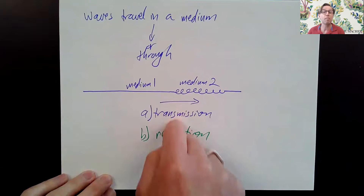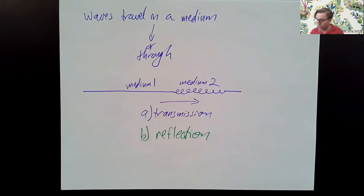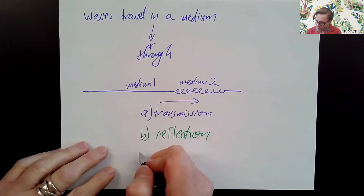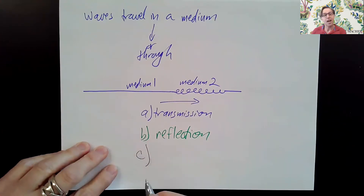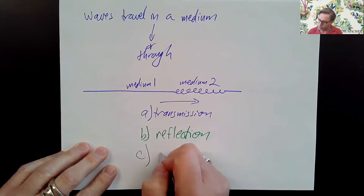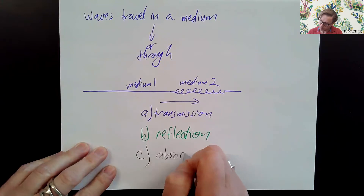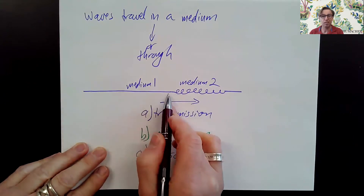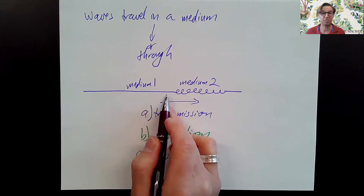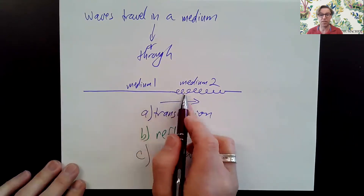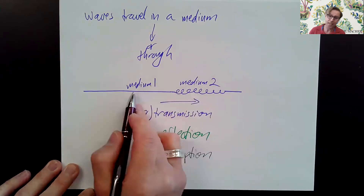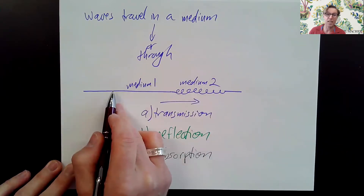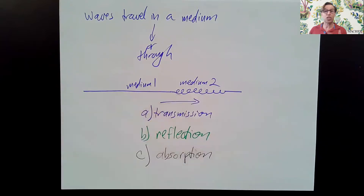Sometimes both transmission and reflection happen together. There is a third option — it's called absorption. Sometimes the energy that's traveling stops traveling. If it continues in the second medium, that's transmission. If it goes back into the first medium, that's reflection. If the wave energy is turned into another kind of energy and stops traveling, that's called absorption.